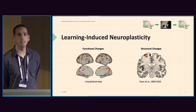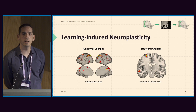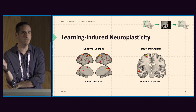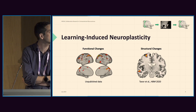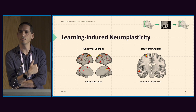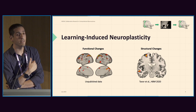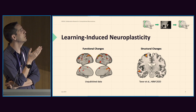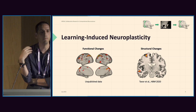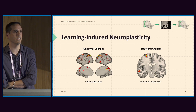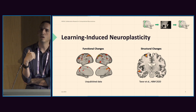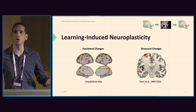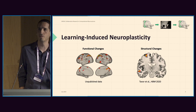And on the right, we can see microstructural modifications as measured with diffusion MRI — in this case, a decrease in mean diffusivity — again following piano training. The kind of questions we ask ourselves in the lab is whether these functional or microstructural plasticity changes are merely a different representation of the same biological phenomena, or whether we have two different biological origins to structural or functional plasticity.